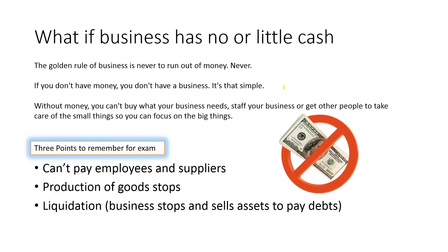What if a business has no cash or little cash? The golden rule for a business is to never run out of cash. If you don't have money, you don't have a business — it's that simple. Without money, you can't buy what your business needs, pay your staff, or get other people to take care of small things so you can focus on bigger things. Money is everything for a business that wants to be successful, because the actual reason most businesses exist is to make profit.